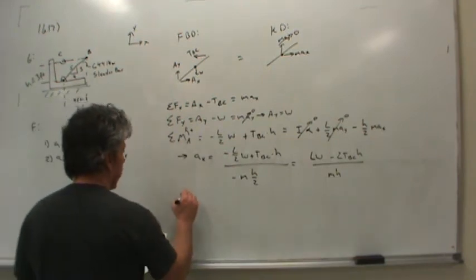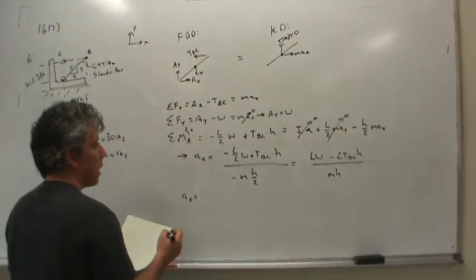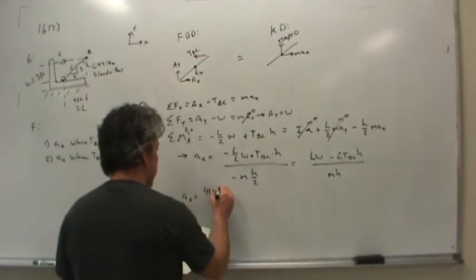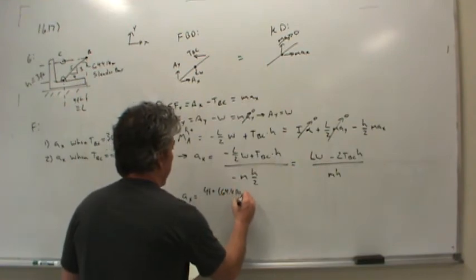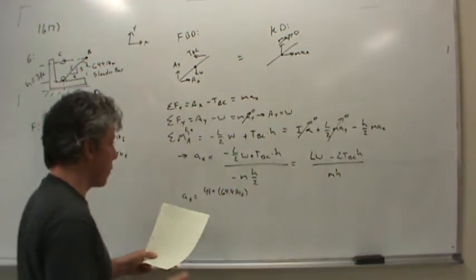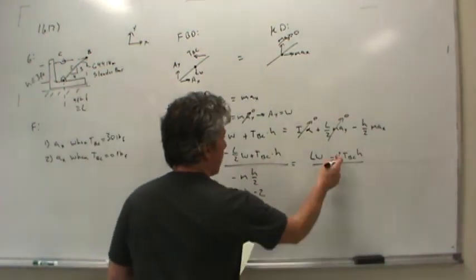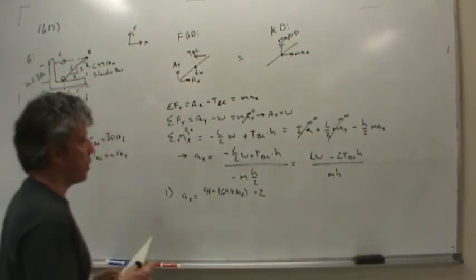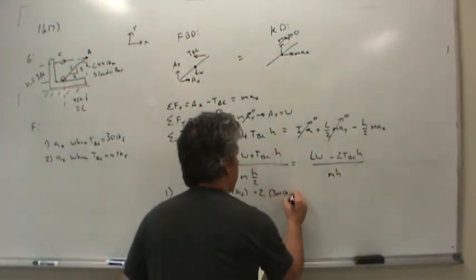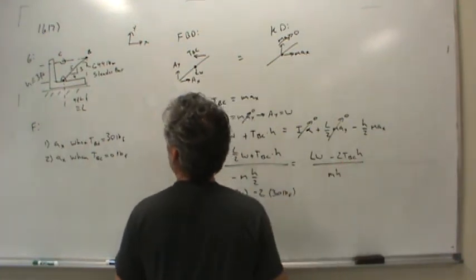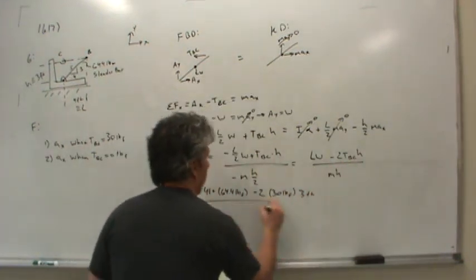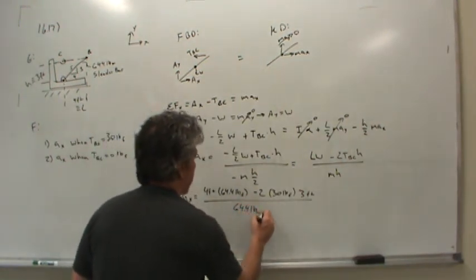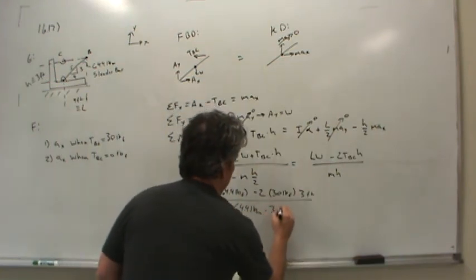And so now, to calculate the acceleration in the X direction, all I have to do is plug in numbers. The length L is 4 foot. The weight is 64.4 pounds force. Notice it's not pound mass, because the equation called for weight. Minus 2 times the tension. Now, for question 1, the tension is 30 pounds, so 30 pounds force. H is just 3 foot, and divided by the mass, but the mass is 64.4 pounds mass, not pounds force. And then H is again 3 foot.